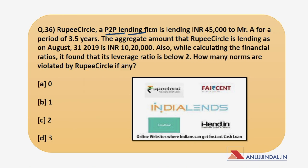Rupee Circle, a P2P lending firm, is lending Rs. 45,000 to Mr. A for a period of 3.5 years. The aggregate amount that Rupee Circle is lending as on August 31st, 2019 is Rs. 10,20,000. Also, while calculating the financial ratios, it found that its leverage ratio is below 2. How many norms are violated by Rupee Circle, if any? To answer this, you must know the prudential norms set by RBI for P2P lending firms. Let's look at the norms one by one.